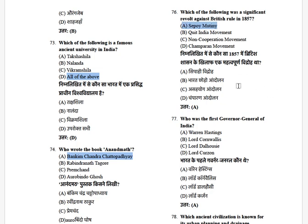Who was the first Governor General of India? The options are: Warren Hastings, Lord Cornwallis, Lord Dalhousie, and Lord Curzon. The answer is Warren Hastings.